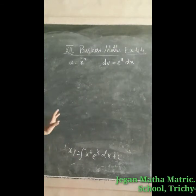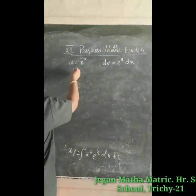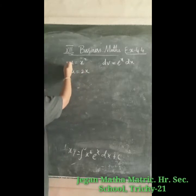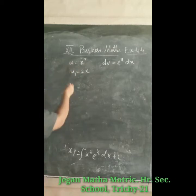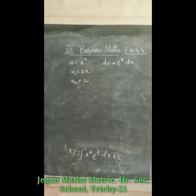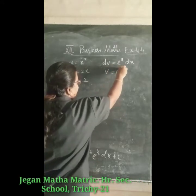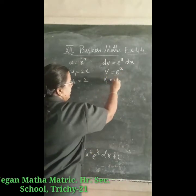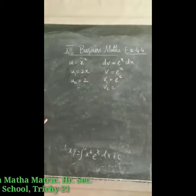With u = x², we differentiate: u′ (u1) = 2x and u″ = 2. For v: integrating dv = e^x dx gives v = e^x, then v₁ = e^x again, and v₂ = e^x.